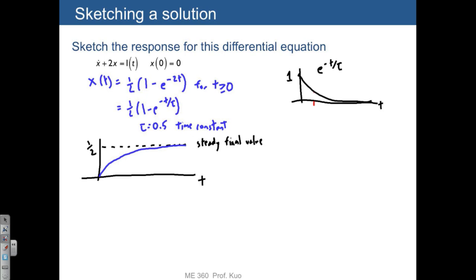Then you can just plug in e to the negative tau over tau, in other words, 1 over e. Well, the value of 1 over e is about 0.37.